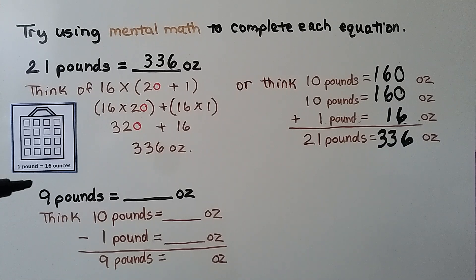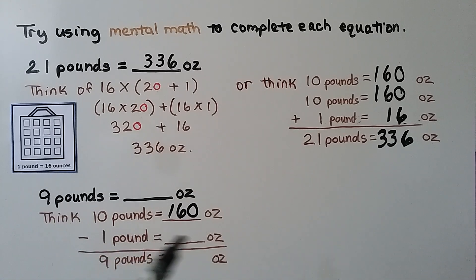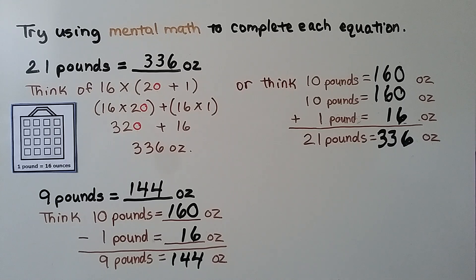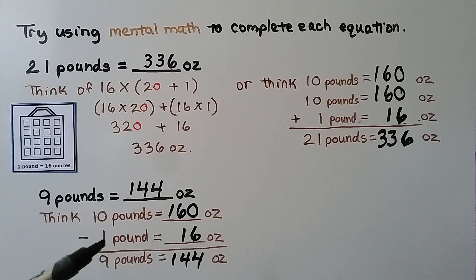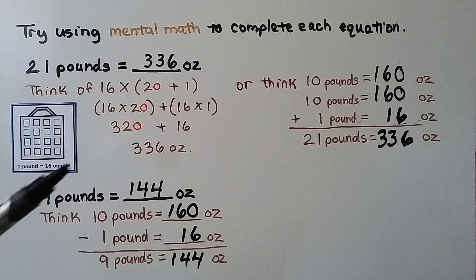To convert nine pounds into ounces, we can think: ten pounds equals one hundred sixty ounces, then subtract one pound's worth — sixteen ounces — to get one hundred forty-four ounces. We could also quickly find eleven pounds: ten pounds plus one more pound equals one hundred seventy-six ounces. For mental math, we can use tens or hundreds to help us calculate easily.